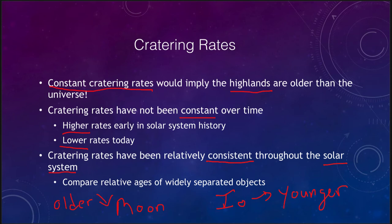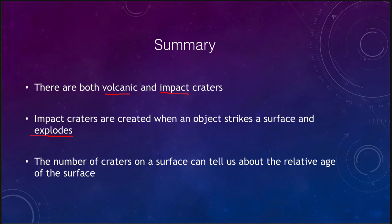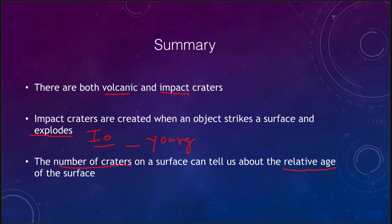So to summarize: we talked about two types of craters — volcanic and impact. Impact craters are created when an object slams into the surface at very high speeds and explodes, and we find them on almost every astronomical object. Gas planets don't get impact craters because there is no solid surface, but every solid surface has some craters — with the exception of Io, which is the youngest surface in the solar system. The more craters we see, the older the surface; the fewer craters, the younger the surface.